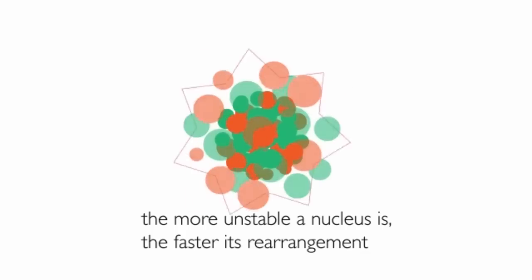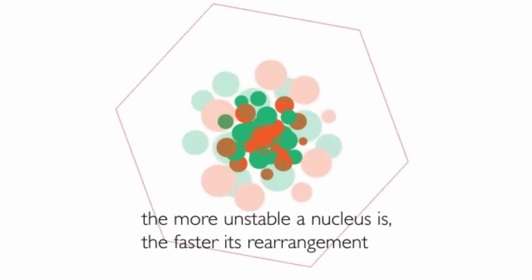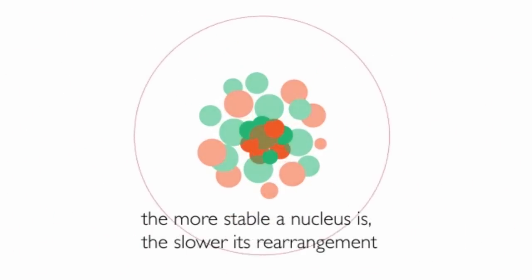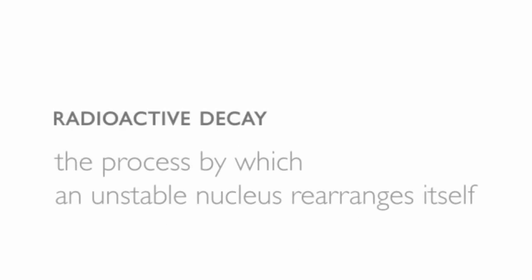The more unstable a nucleus, the faster it will try to rearrange itself into a more stable state. And another name for this process is radioactive decay.